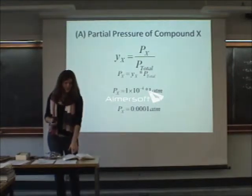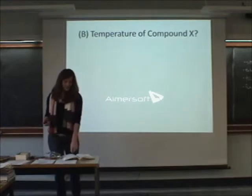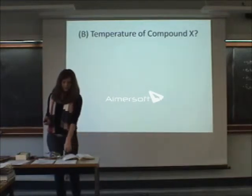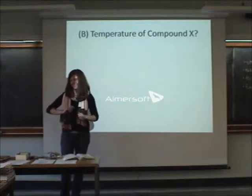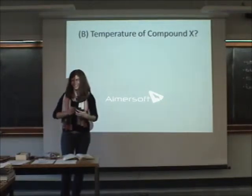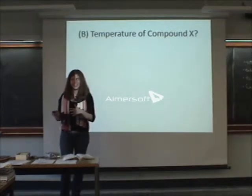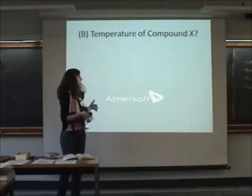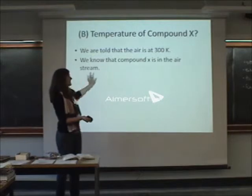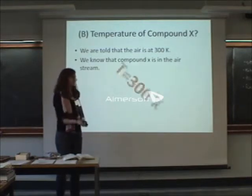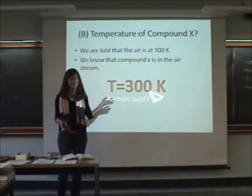The next part is, if the temperature of the air is 300 Kelvin, what is the temperature of compound X? 300 Kelvin. Why? They're mixed together. Right, so X is in the air, so X is the same temperature as the air. We're told the air is at 300 Kelvin. We know that X is in air. 300 Kelvin.